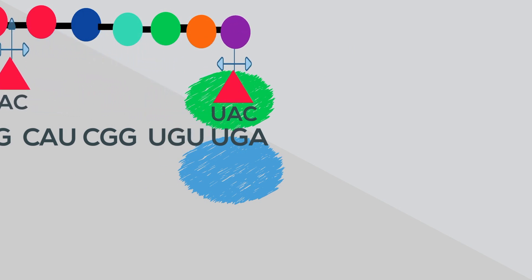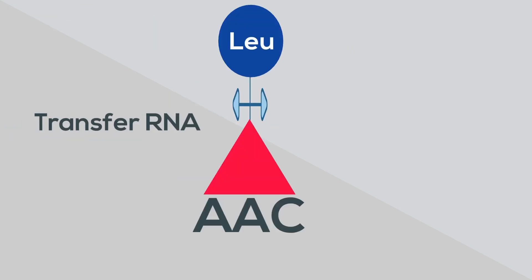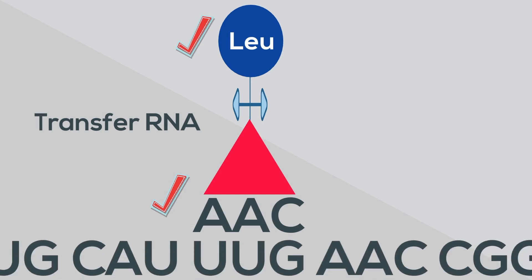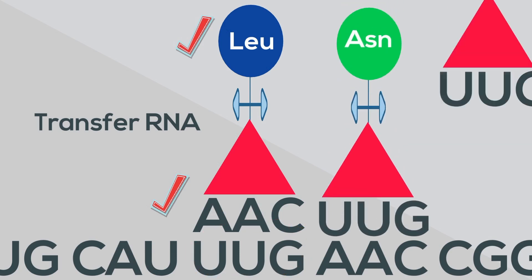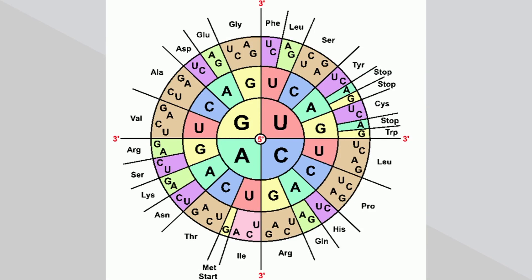In this example, the stop codon is UGA. A transfer RNA has an anticodon attached and an amino acid. The anticodon is a unit made up of three nucleotides that correspond to the three bases of the codon on the mRNA. Each amino acid attaches to a particular codon. You can use an amino acid chart to see which codon matches with each amino acid.